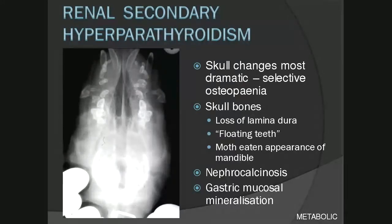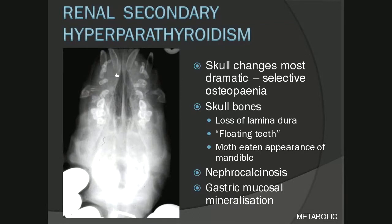In the skull bones, one will see a loss of the laminadura — the thin sclerotic bone margin running parallel to the tooth roots that depicts the alveolar bone forming the tooth socket. One can see floating teeth; on the DV radiograph, the teeth appear to be everywhere with no sclerotic laminadura margin around their roots. Nephrocalcinosis — deposition of calcium salts in the renal parenchyma — or gastric mucosal mineralization can also be seen, all part of the renal failure complex.